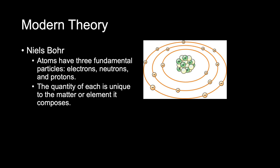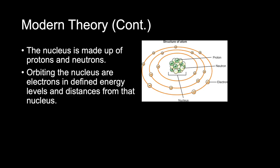In radiology, we select elements for use because of their atomic structure and how they interact with x-rays. You can see the Bohr model of the atom — the Bohr atom — in this image. The atom has a nucleus made up of protons and neutrons, collectively called nucleons. Orbiting that nucleus are electrons in defined energy levels and distances from the nucleus.